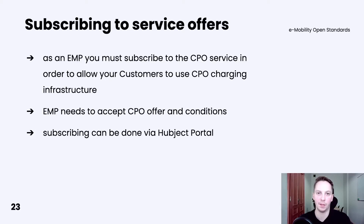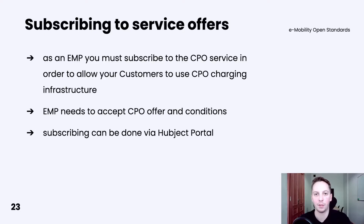That's exactly what is done in the process of subscribing to a service offer. In the Hubject platform, you will see multiple offers for different services from different CPOs. Each offer will have individual terms, conditions, and pricing. You need to review the details and decide whether you can agree on them. If each partner implements the given service and the EMP agrees on the CPO terms, then both can start integration by subscribing to the service offer.